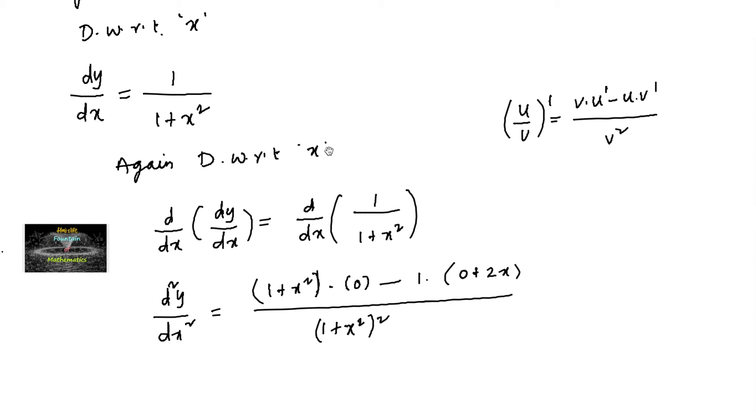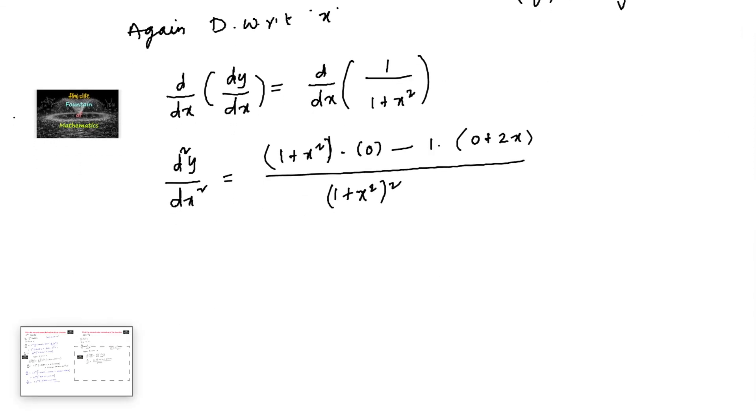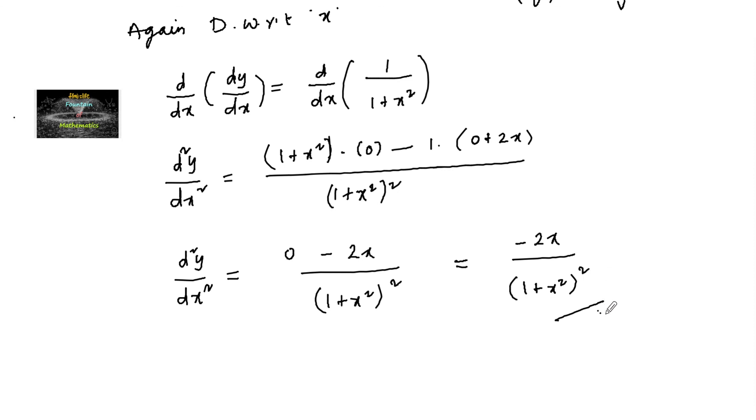So we will get d square y by dx square is equal to, this is 0 minus 1 into 2x that is minus 2x upon 1 plus x square whole square. So this is the second order derivative of the given function tan inverse x.